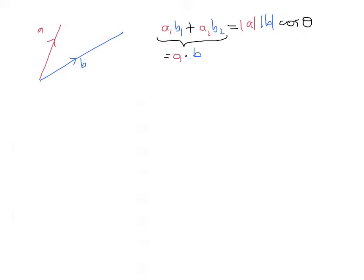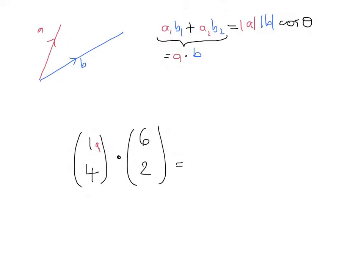Say we've got vector a = 1i + 4j, and we're dotting that with vector b = 6i + 2j. What we do is multiply a1 by b1, multiply a2 by b2, and add them up. So 1 times 6 plus 4 times 2 equals 14. Really easy.